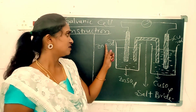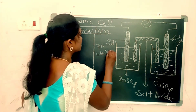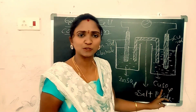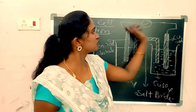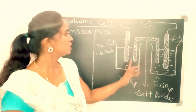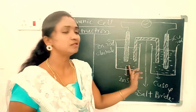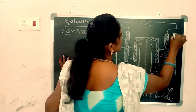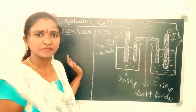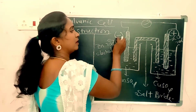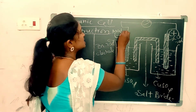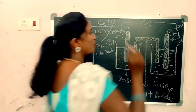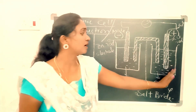The first half cell contains zinc rod (zinc electrode) dipped in zinc sulfate solution; copper electrode dipped in copper sulfate solution. Both electrodes are connected through a voltmeter, and there is a salt bridge between the two half cells. Zinc rod acts as anode, which has negative charge; copper rod acts as cathode, which has positive charge.